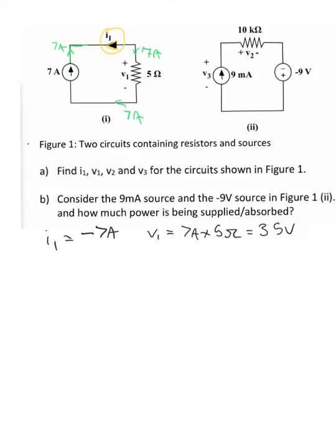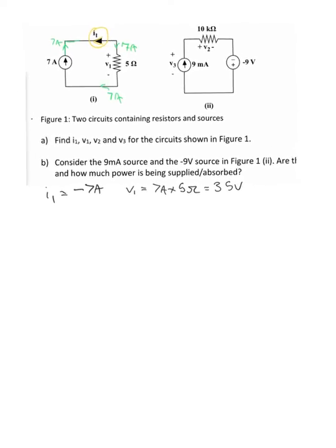The second circuit is a little bit more complicated. It's got a minus nine volt source and we don't really want to work with a minus nine volt source because we need to work out whether it's supplying or absorbing power. So the first thing I'm going to do is redraw that circuit. We've got a nine milliamp ideal current source — remember that an ideal current source also has a voltage associated with it, and that voltage is V3.